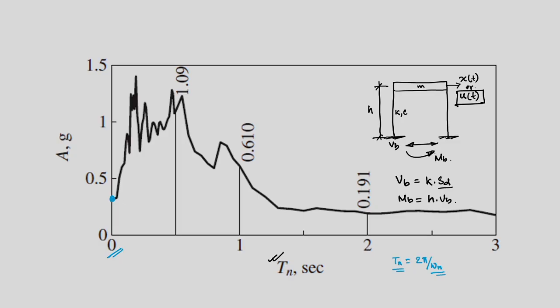This response spectrum gives the maximum value of the response. So if we focus on the acceleration response at the top and find its maximum value, it will be the maximum value of the ground acceleration — what we call peak ground acceleration, or PGA. So the response at T_n equal to 0 will equal PGA. We will verify this when we develop the code.